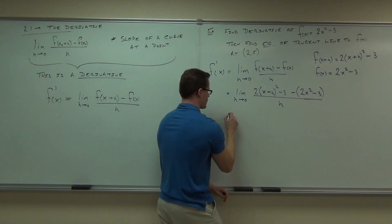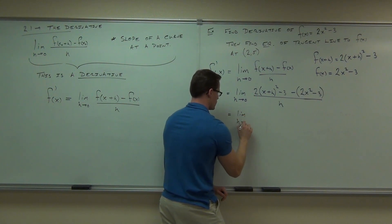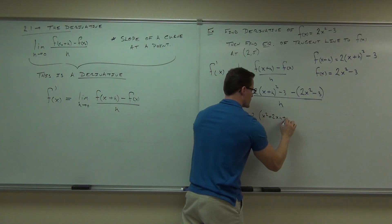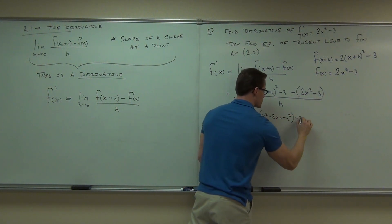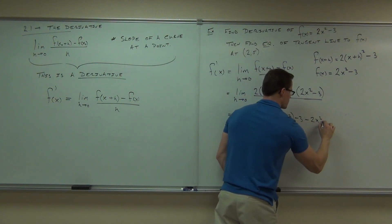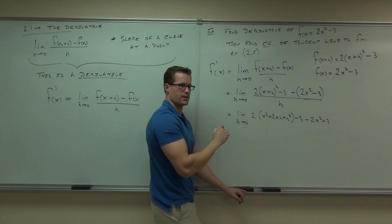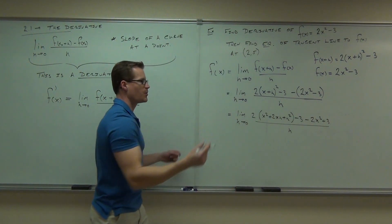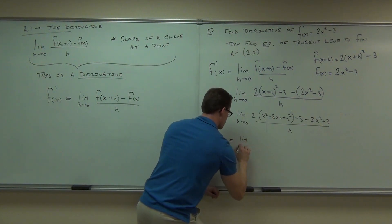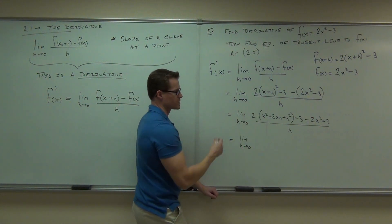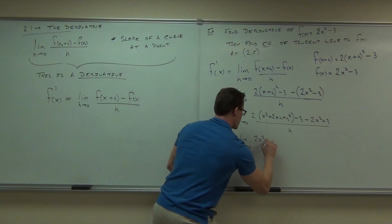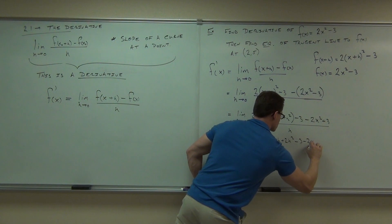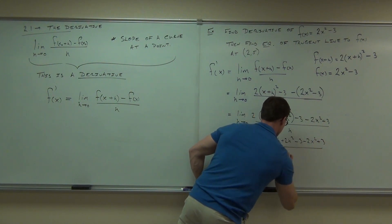We're going to distribute. We'll get 2(x+h)² is x² + 2xh + h². Minus three minus 2x² plus three. You see where the plus three is coming from? Distributing that negative out there, that's going to give us that plus three. All over h. All over h. A couple more steps. Well, we still got to distribute that two. So we'll get our 2x² + 4xh + 2h² - 3 - 2x² + 3. All over h.